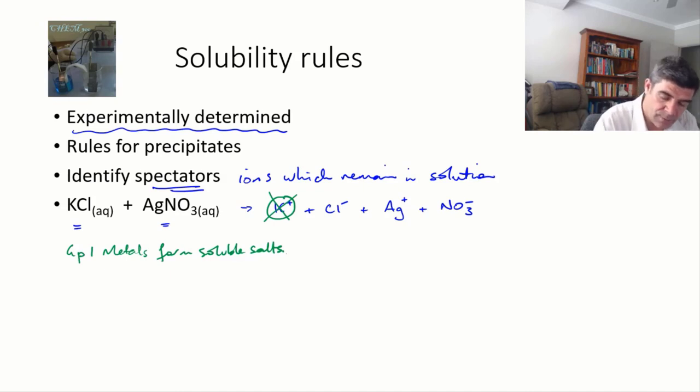One other general rule that we may remember is that all nitrates are soluble. Therefore, nothing nitrate will form a precipitate either. So we have a nitrate over here, so it disappears. So our green circled substances over here are our spectators.